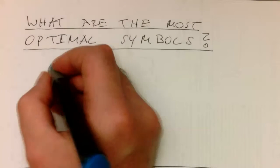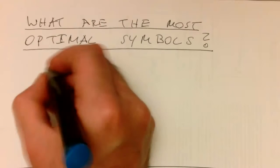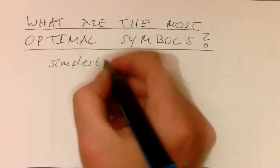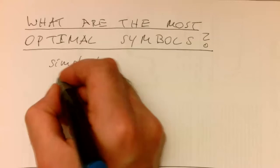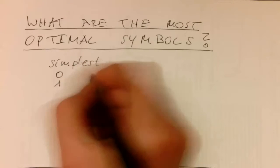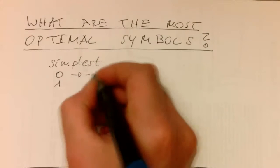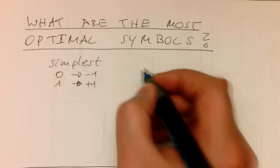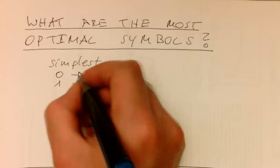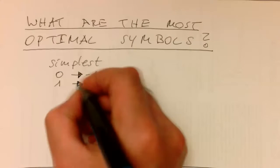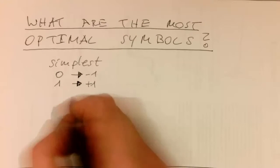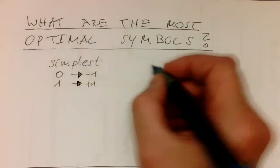Obviously the simplest symbol is that we just turn a zero into minus one, for example, and a one into plus one. This could be done but might not be very efficient.